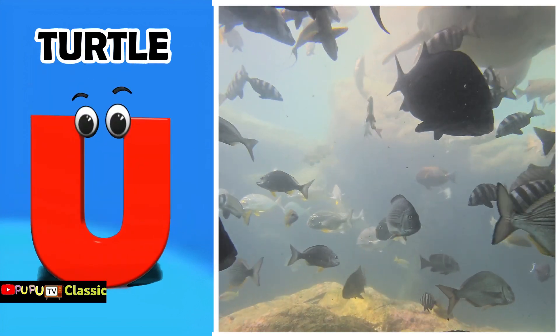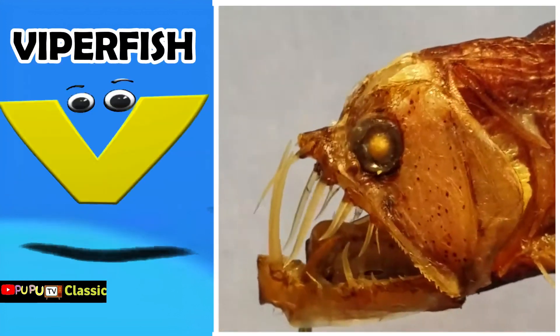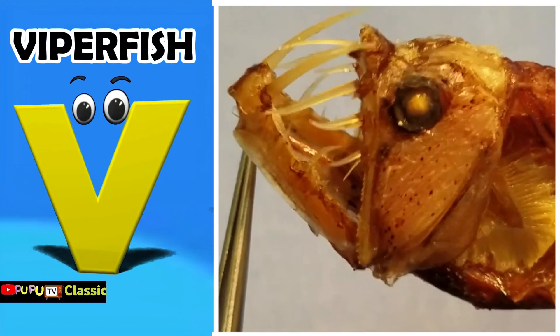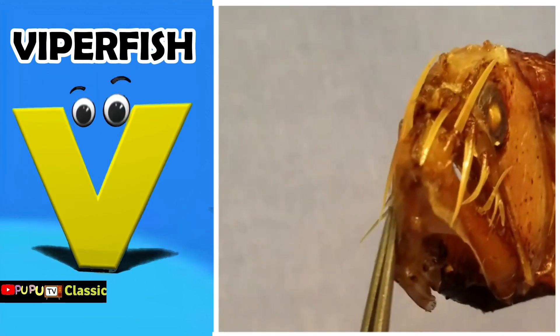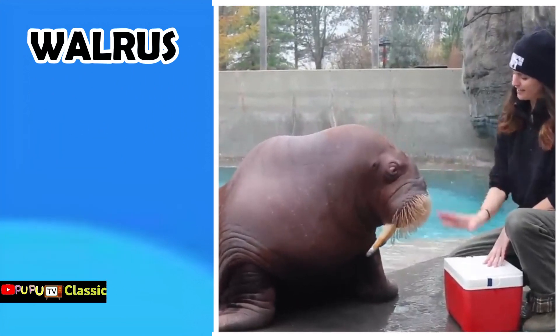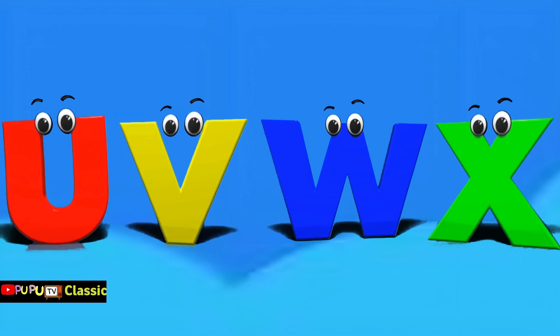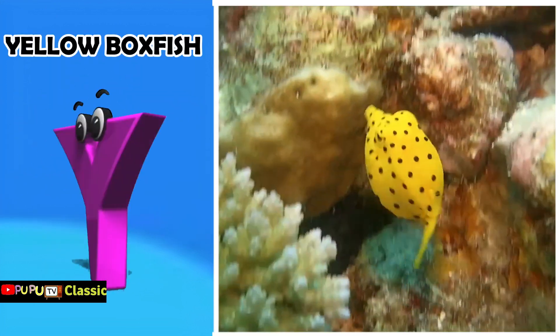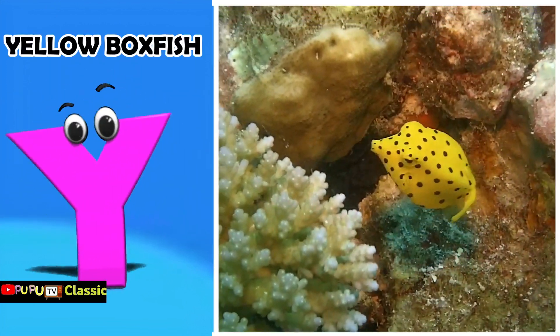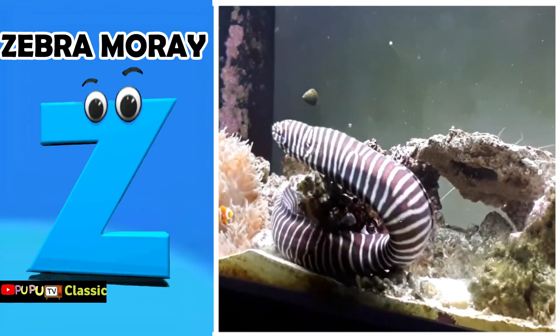U is for unicorn fish. Uh, uh, unicorn fish. V is for viperfish. V, v, viperfish. W is for walrus. W, w, walrus. X is for x-ray fish. Z, z, x-ray fish. Y is for yellow boxfish. Yuh, yuh, yellow boxfish. Z is for zebra moray. Z, z, zebra moray.